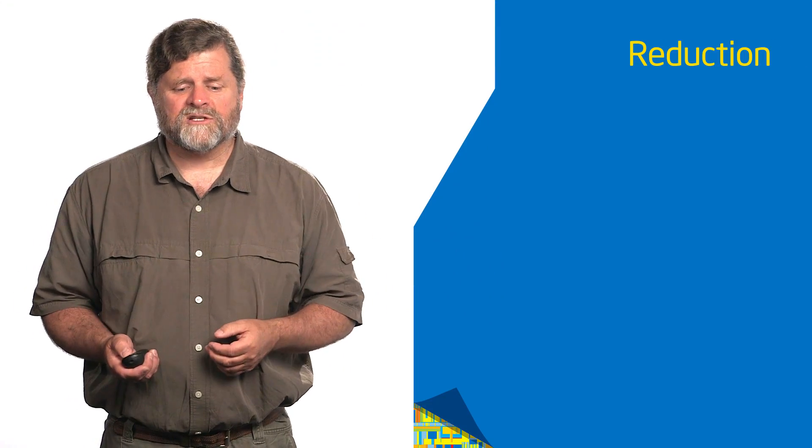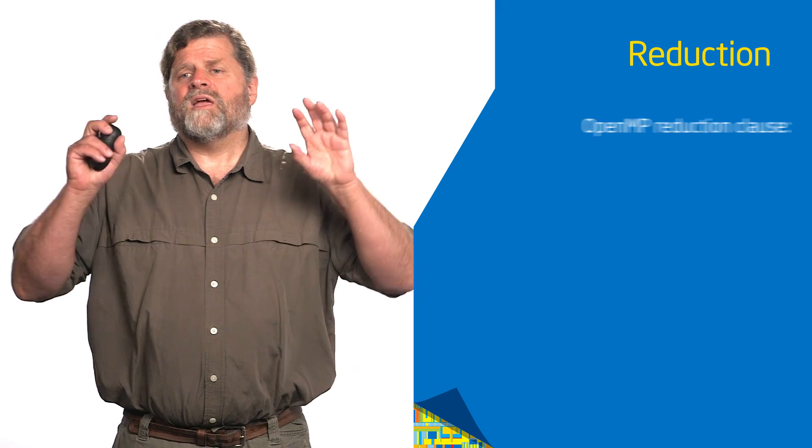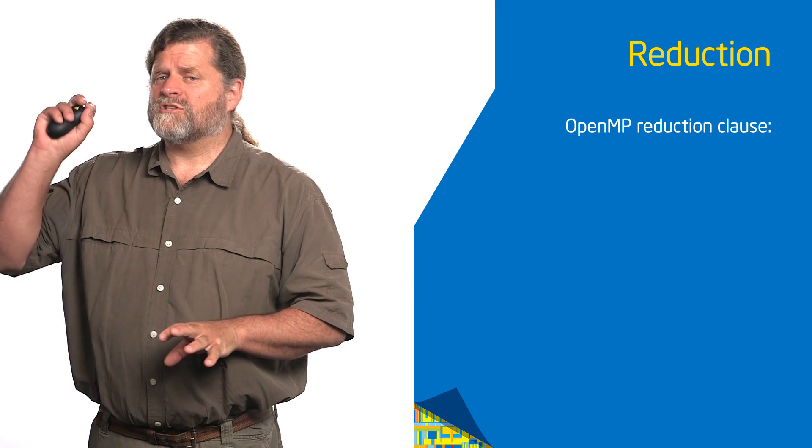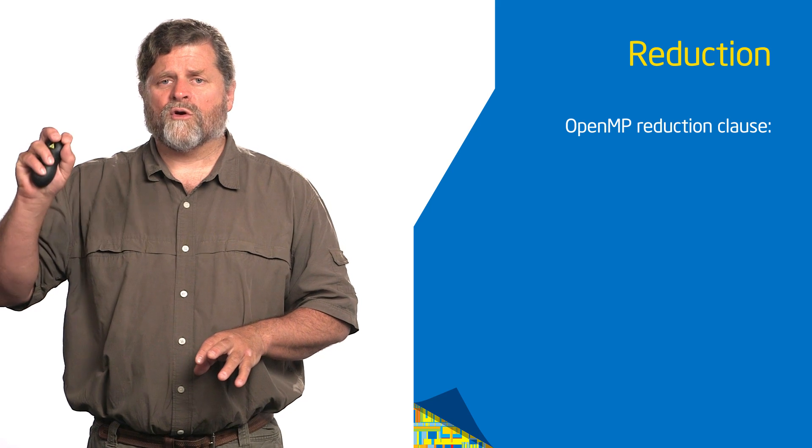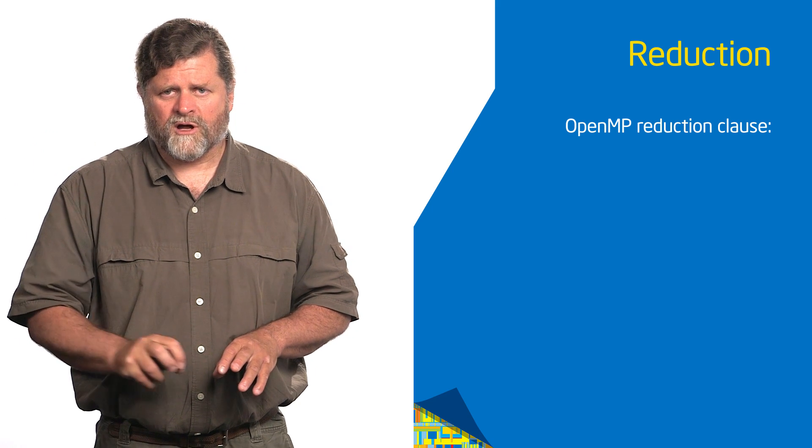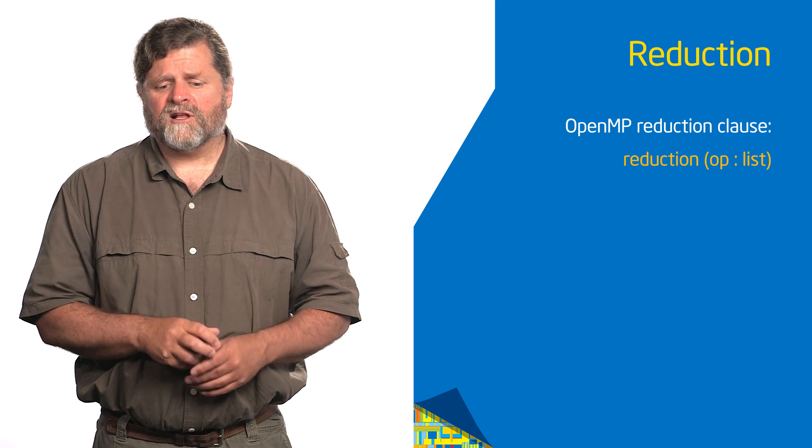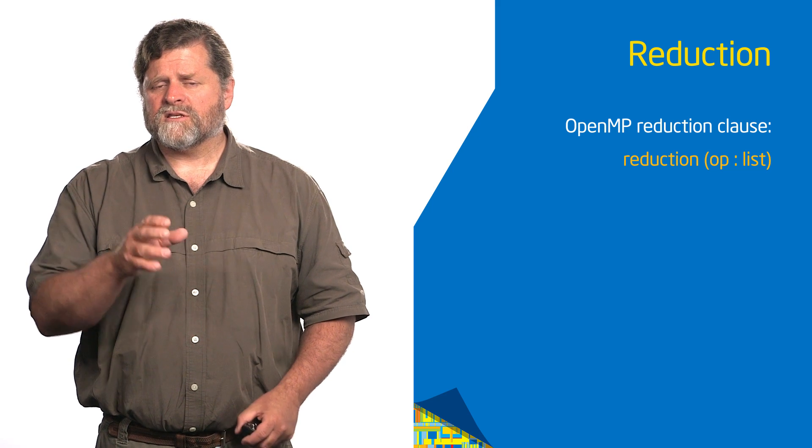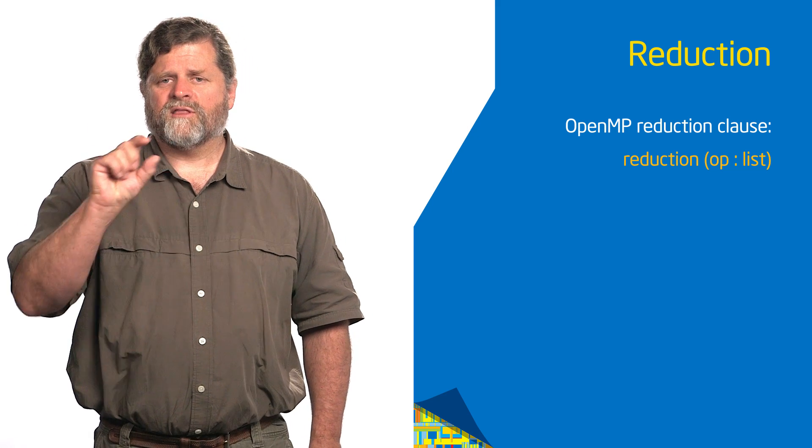Let me tell you how the built in reductions work. So it's a reduction clause. You're going to add it to a parallel construct or you're going to add it to a for construct. And the form of the clause is you're going to open the parentheses, then you're going to list the operator, then a colon, then a list of variables.